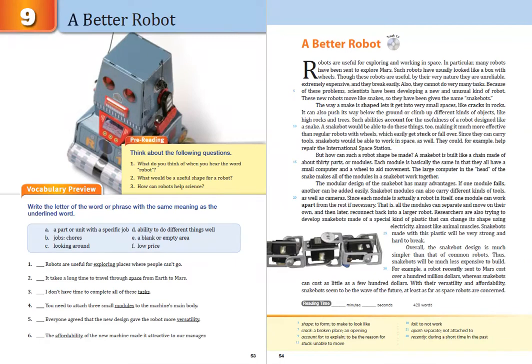The modular design of the snakebot has many advantages. If one module fails, another can be added easily. Snakebot modules can also carry different kinds of tools, as well as cameras. Since each module is actually a robot in itself, one module can work apart from the rest if necessary. That is, all the modules can separate and move on their own, and then later reconnect back into a larger robot.